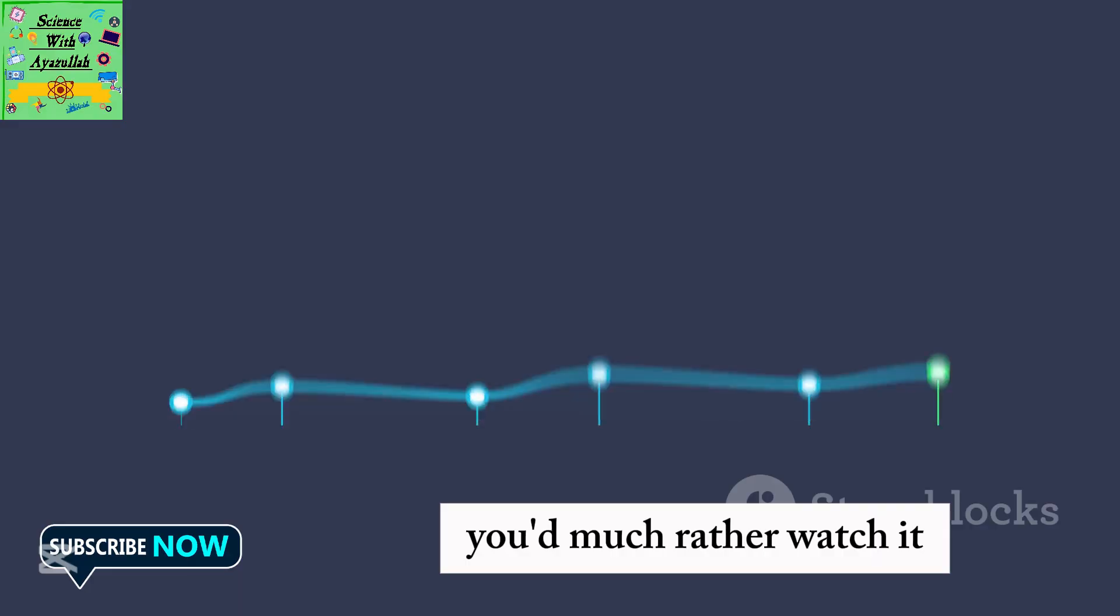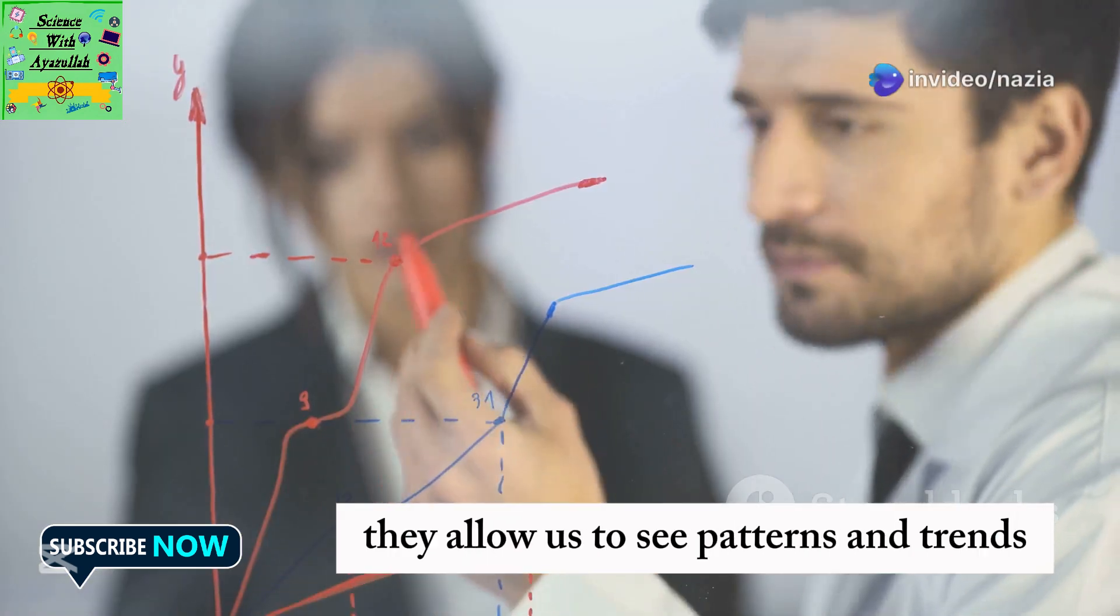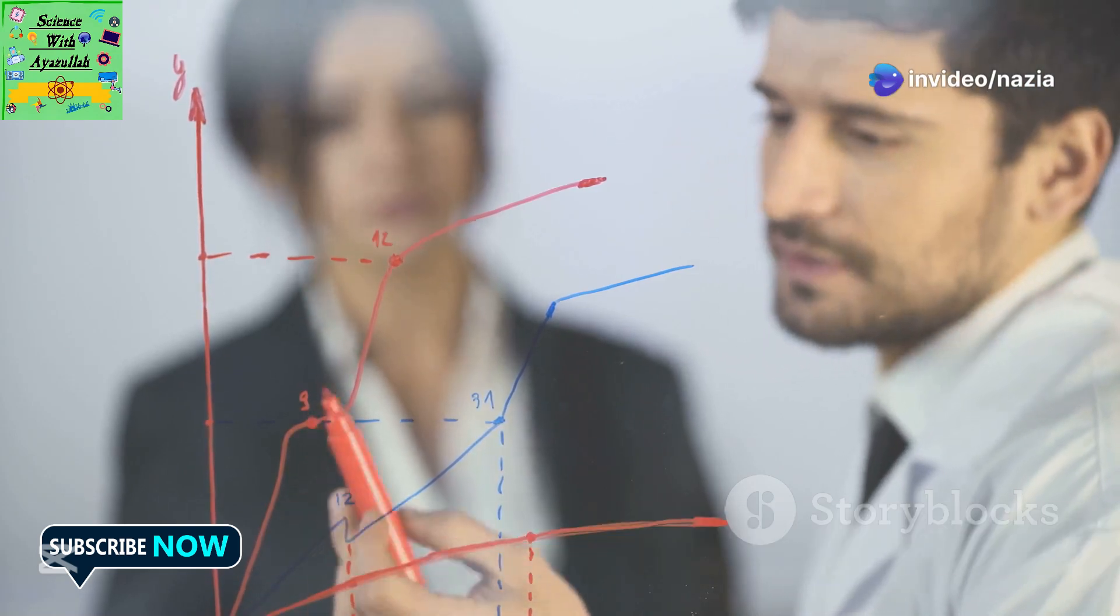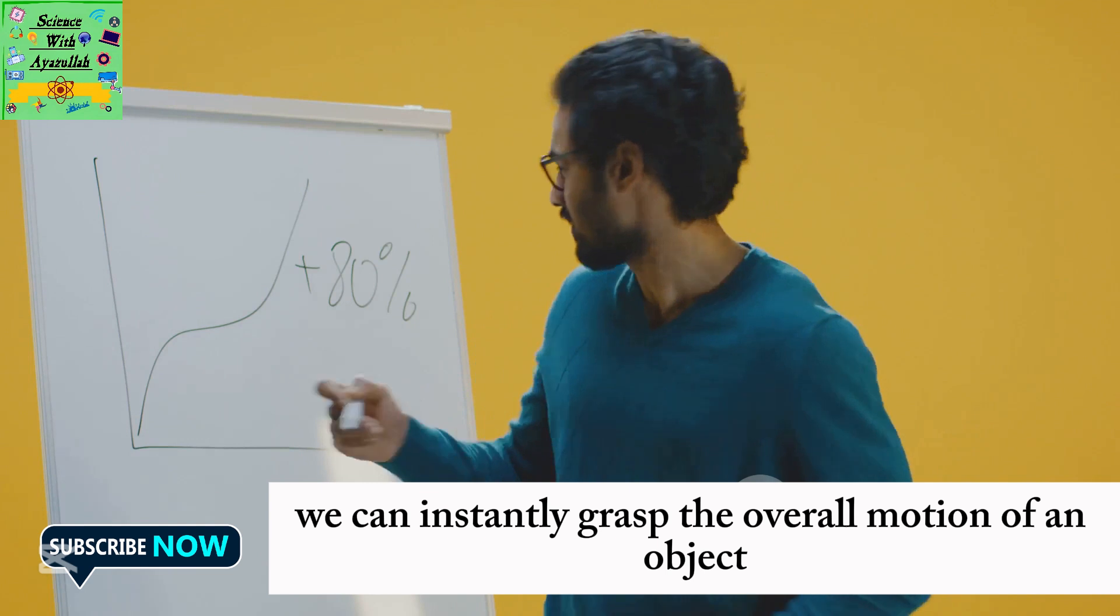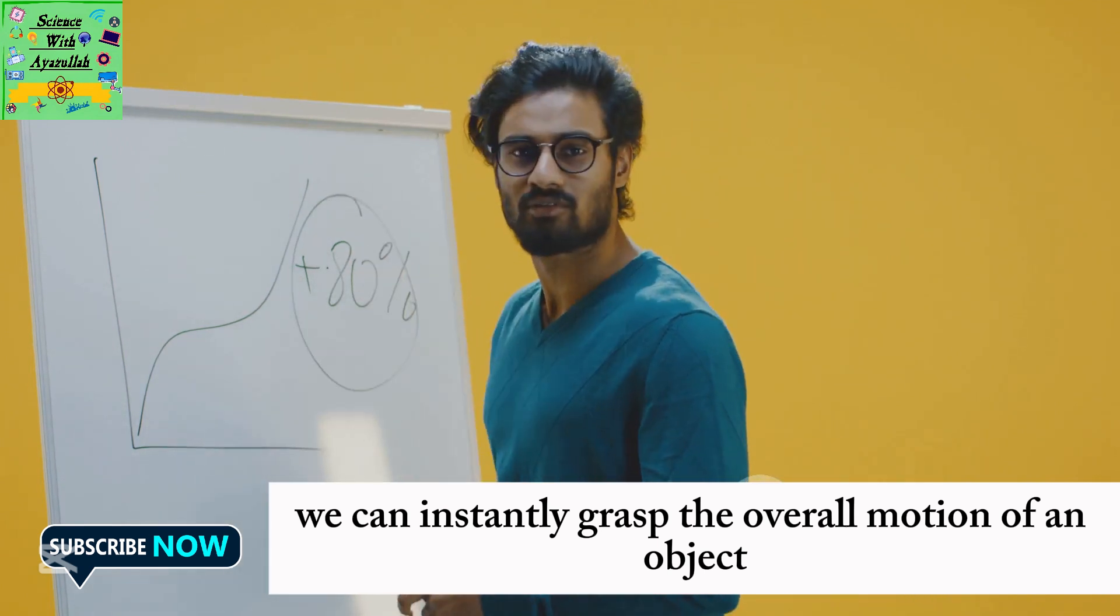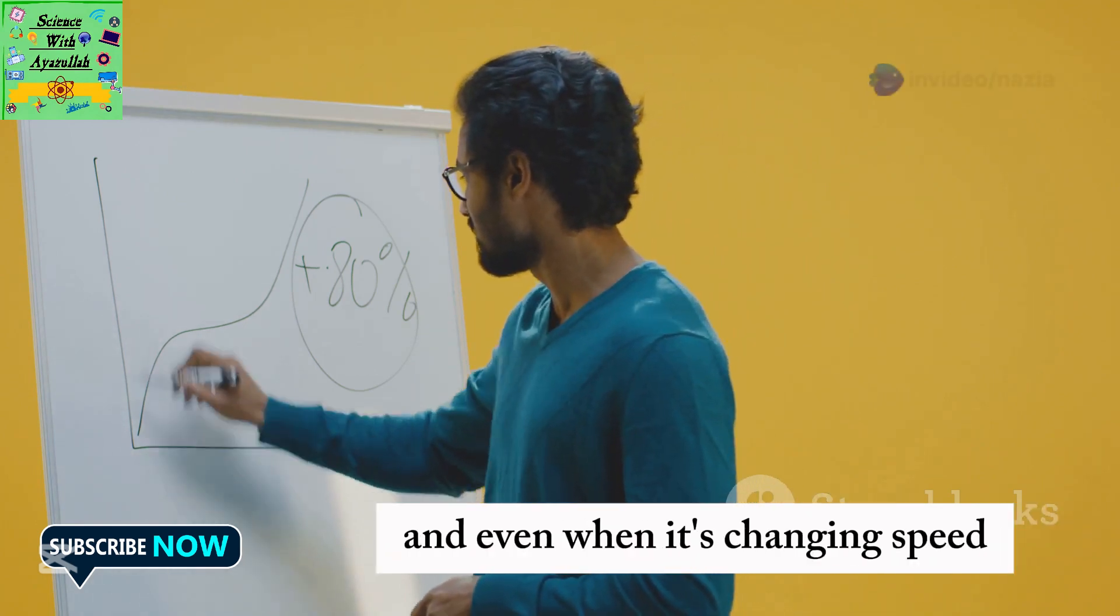Tough, right? You'd much rather watch it. Graphs are like visual stories. They allow us to see patterns and trends that might be hidden within a bunch of numbers. With a single glance at a distance time graph, we can instantly grasp the overall motion of an object, when it's moving fast, when it's taking a break, and even when it's changing speed.